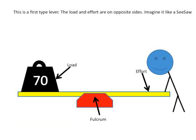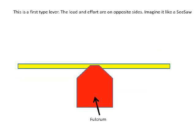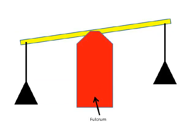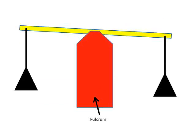This is a first type lever. The load and effort are on opposite sides. Imagine it like a seesaw. Another example of a type 1 lever is a balance.